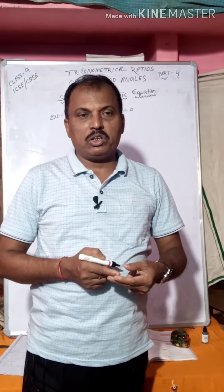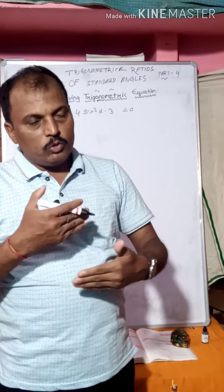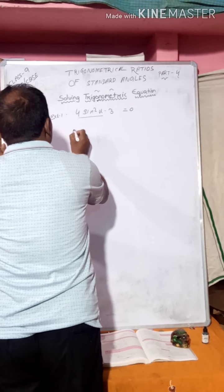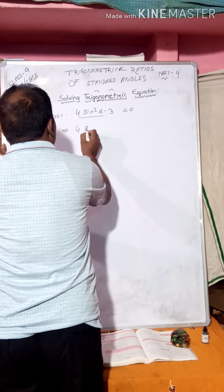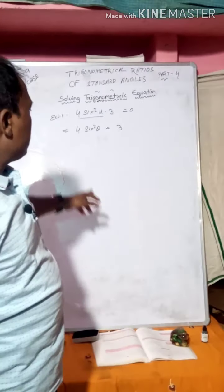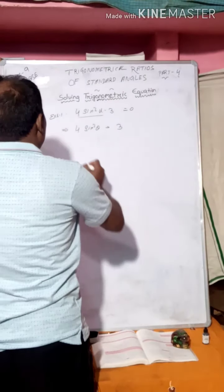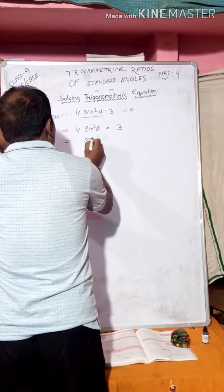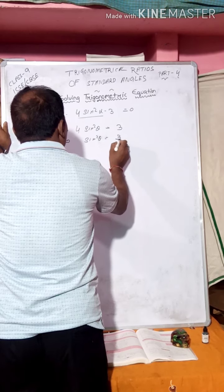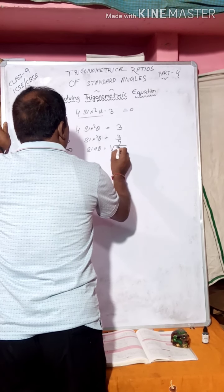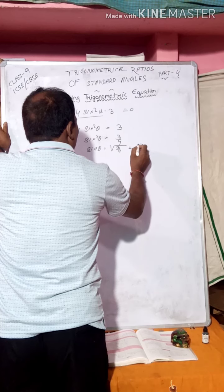The basic rule of equations: the unknown quantity should be on the left and the known quantity should go to the right. So 4sin²θ = 3. That means sin²θ = 3/4, and sinθ = √(3/4), which is equal to √3/2.